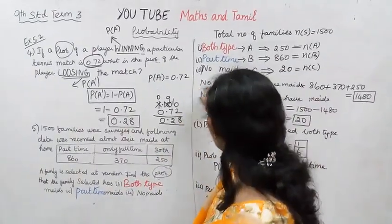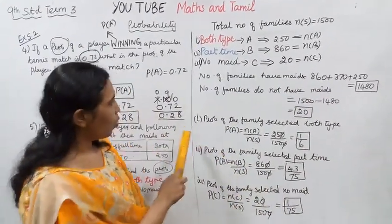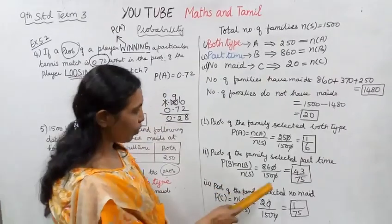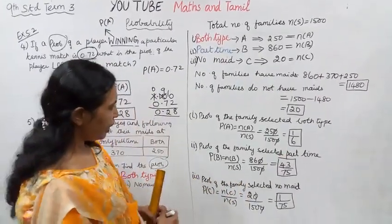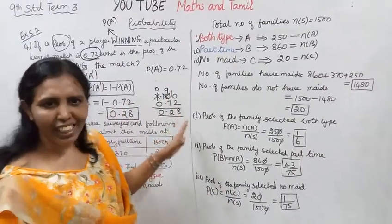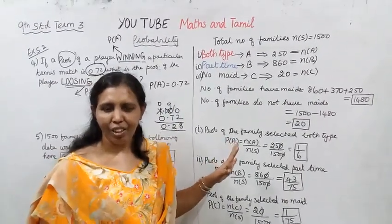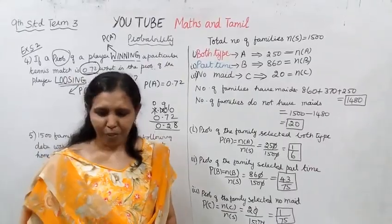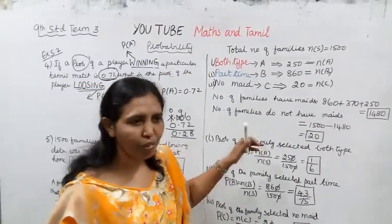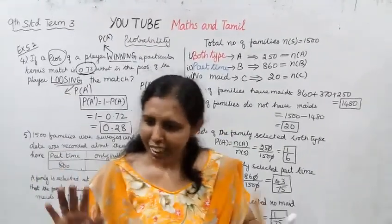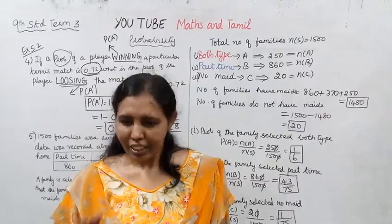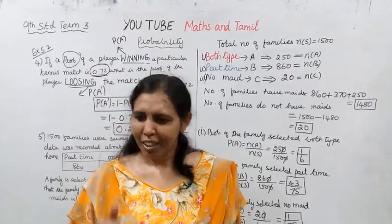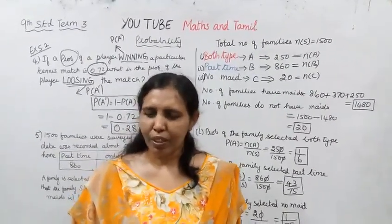So the probability of the selected family having both type maids, part-time maids, and no maids are all found. This channel helps you get 100 marks. Subscribe to the channel and click the bell button.